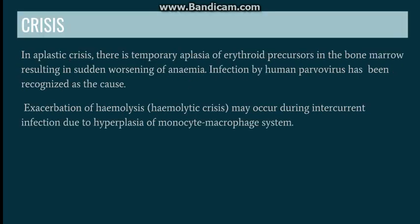Going to the exacerbation of symptoms — that is, the crisis. Two types of crisis are seen in hereditary spherocytosis: aplastic crisis and hemolytic crisis. In aplastic crisis, infection by parvovirus leads to temporary aplasia of erythroid precursors and sudden worsening of symptoms, since hemolysis was already ongoing. In hemolytic crisis, any infection leads to hyperplasia of the macrophage system, increasing hemolysis and triggering a hemolytic crisis.